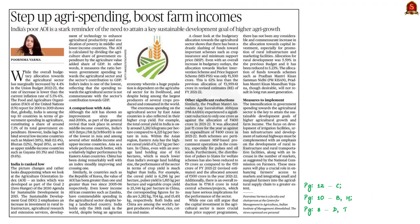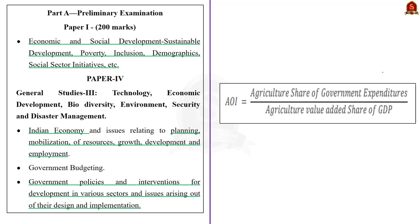This editorial article talks about the critical analysis of the budget allocation towards the agriculture sector. The budget allocation towards the agriculture sector for the financial year 2022-23 has only marginally increased. In this context, let us discuss the need for increased government spending on agriculture and how it will boost farm incomes. The syllabus regarding this editorial article discussion is highlighted here.